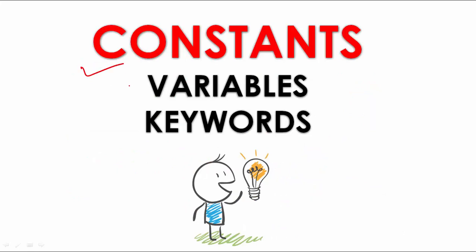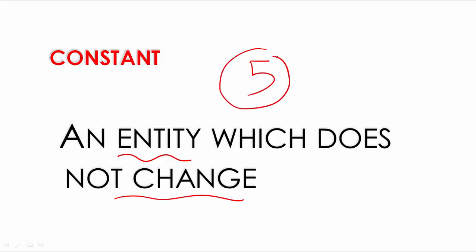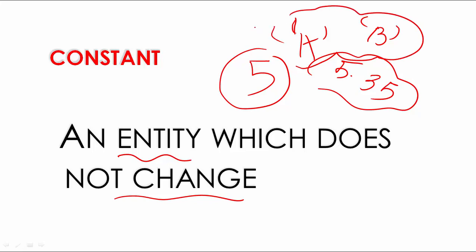First we will understand what is a constant. A constant is an entity — a thing which does not change. For example, the number 5 is never going to change; it's a value, so it's a constant. Similarly, 5.35 is also a constant. Your exam grade, for example a grade B, is also a value that is not going to change — these things are known as constants.